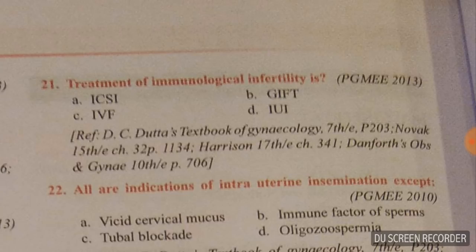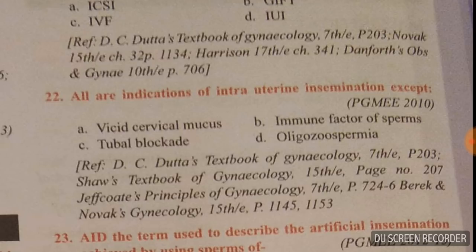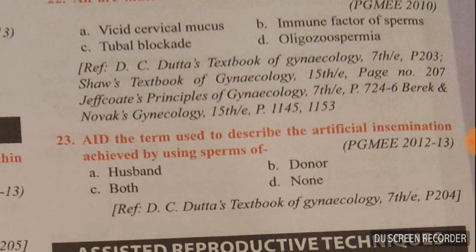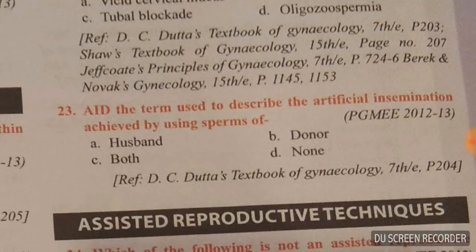Question twenty-one: treatment of immunological infertility is by intrauterine insemination — option A is right. Question twenty-two: all are indications of intrauterine insemination except — viscid cervical mucus, immune factor of sperms, and oligospermia are all indications. But tubal blockage — if there is tubal blockage, intrauterine insemination will not help, so option C is the right answer for 'except.'